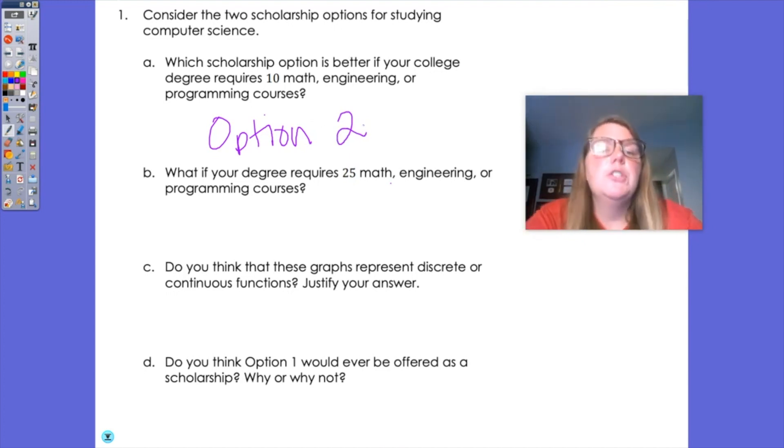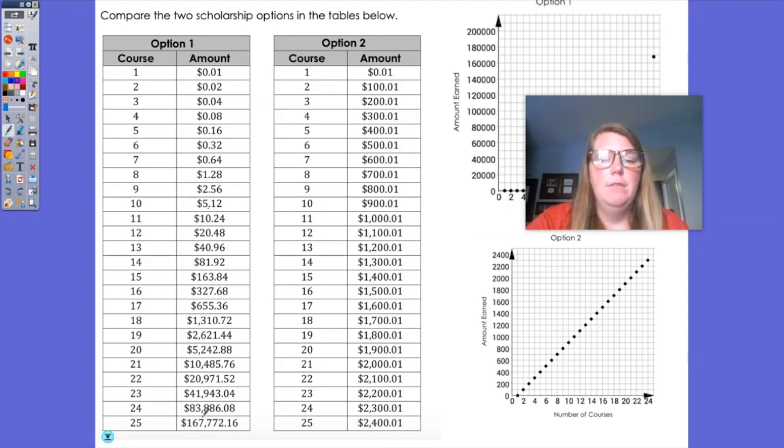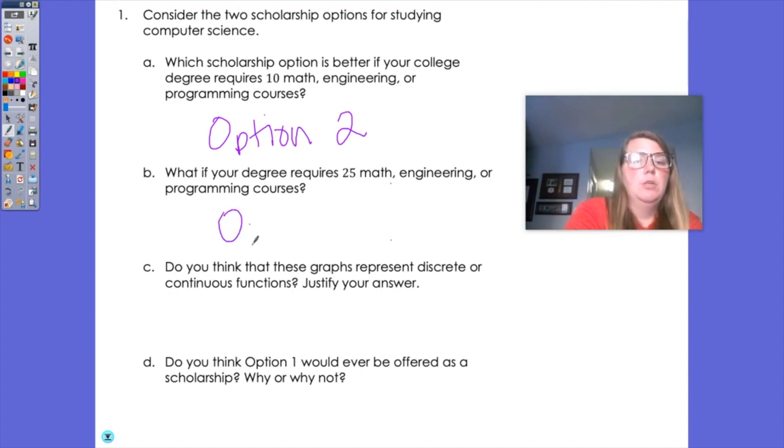But what if your degree required 25 courses? So if we go back to 25, obviously that exponential or geometric option would be better. So option one.